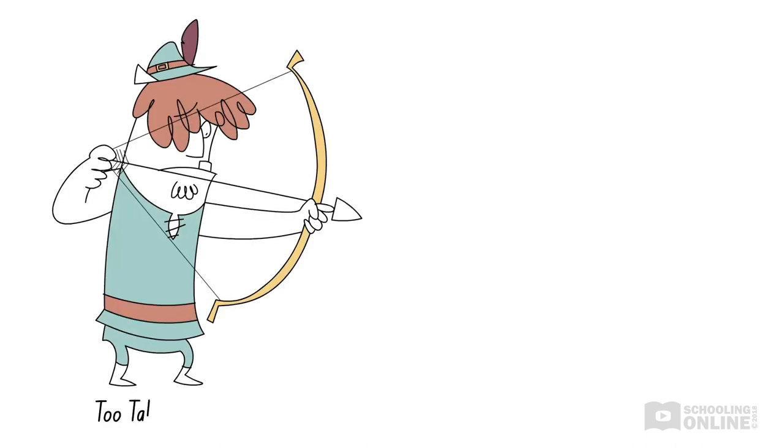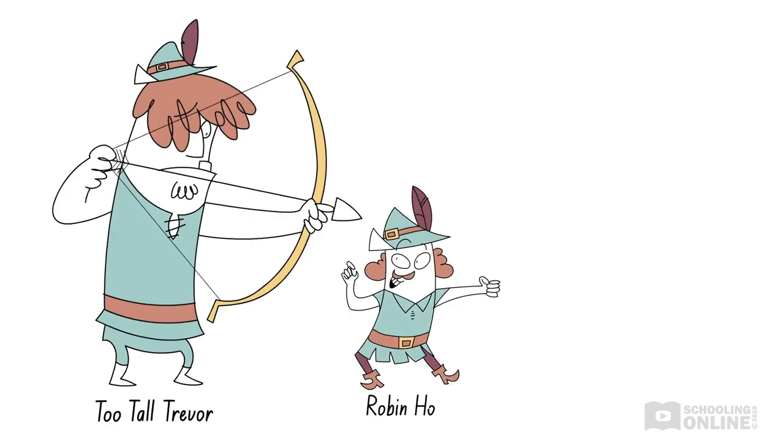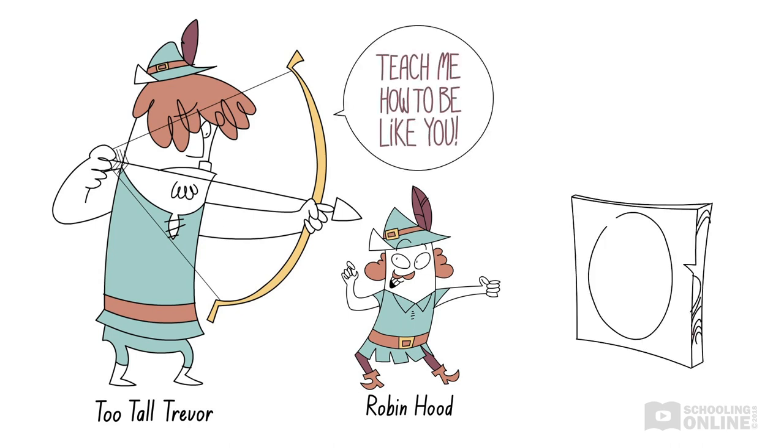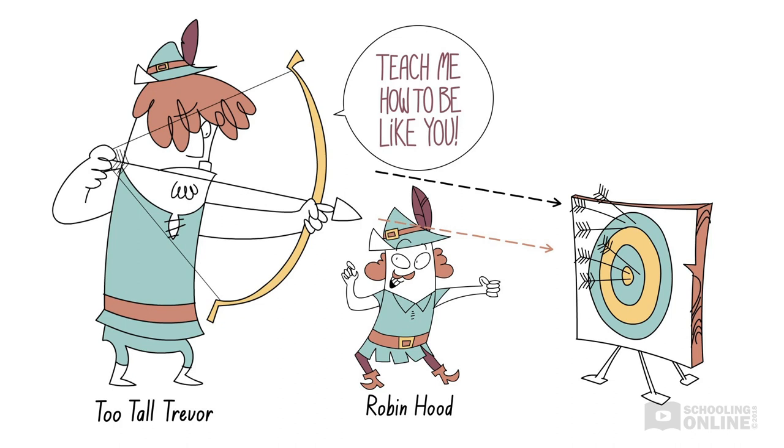Let's go back to Too Tall Trevor, because Robin Hood is giving him some tips. What's this? Because Too Tall Trevor was landing all his arrows above the target, he could try to aim a little lower to reduce his systematic error and thus improve his accuracy. Genius!